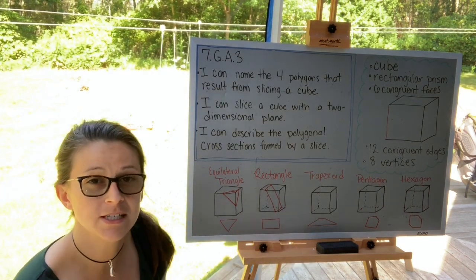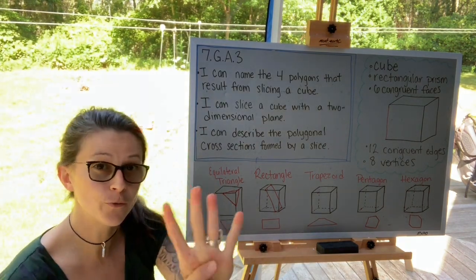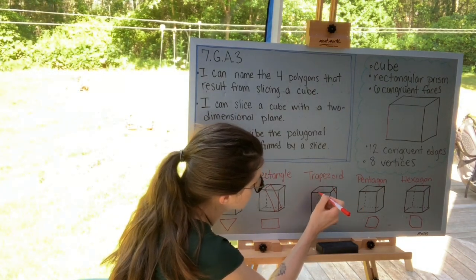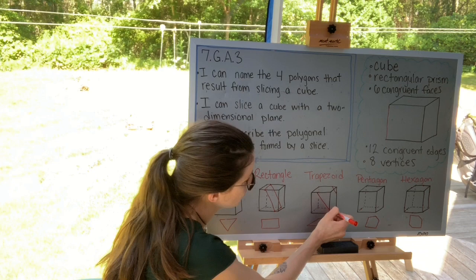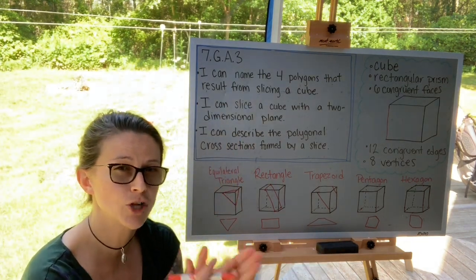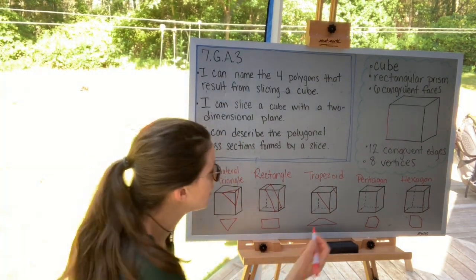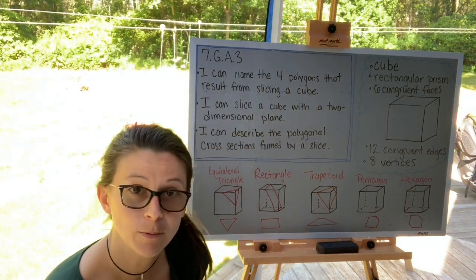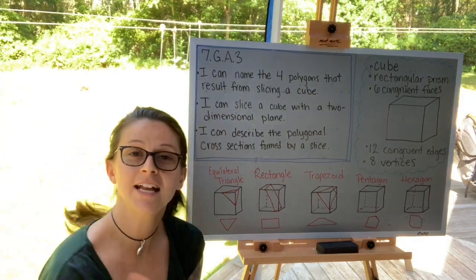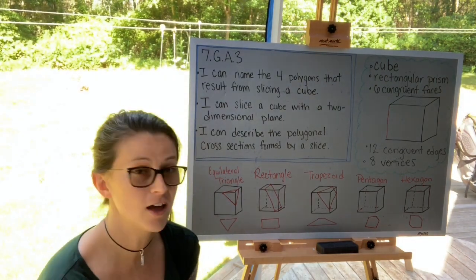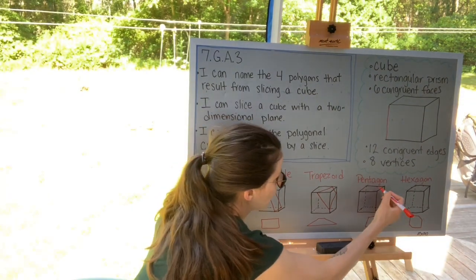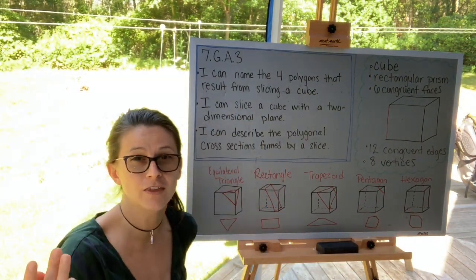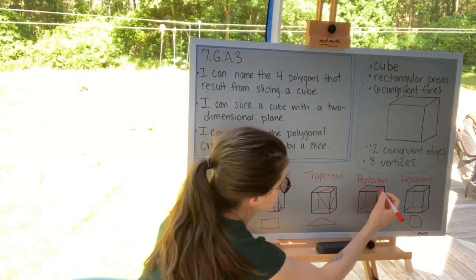A trapezoid is another quadrilateral — you want to go through four faces since it has four sides. You're going to make sure that two of the faces will be parallel, because that is the important component of a trapezoid. The two bases are parallel; then connect the parallel faces to form your trapezoid. A pentagon needs to go through five faces because it has five sides, so just draw a point on five of the edges and connect them to form the pentagon.